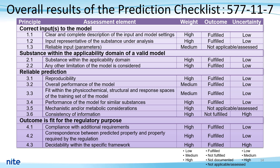Next, I would like to talk about the prediction checklist for the other substance. This is the result of the prediction checklist. In terms of some items, the outcomes of this substance are the same as the outcomes of the previous chemical. I would like to explain focusing on assessment elements which have different outcomes between the previous chemical and this chemical.